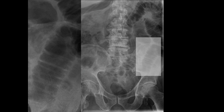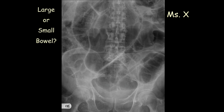Another abdominal X-ray on an elderly lady. There is a viscus — what looks like large bowel — which is quite distended and gas-filled. There is not much air in the rectum, and there is emptiness in the right iliac fossa. This is caecal volvulus, where the caecum is twisted along its mesentery and flipped upward.